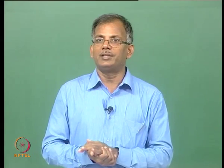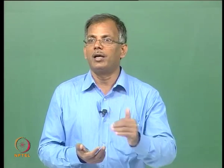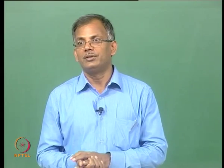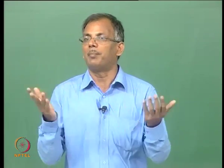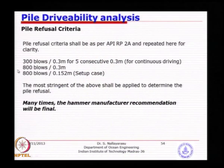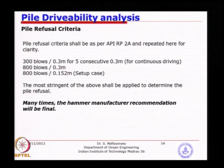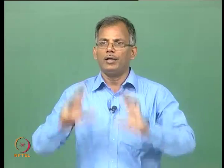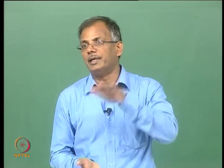Suppose this condition happens earlier than your design penetration - say design penetration is 90 meters but this happens at 15 or 20 meters. That means this is actually early refusal: either your hammer selected was not sufficient, or the expected resistance to driving was unexpectedly higher than estimated. The API blow count criteria is laid out in the code. Several times hammer manufacturers also have input depending on what type of hammer they use and the efficiency, but ultimately the code prevails as the final criteria. So 300 blows for 0.3 meter, for 5 consecutive 0.3-meter segments - you monitor them consecutively.